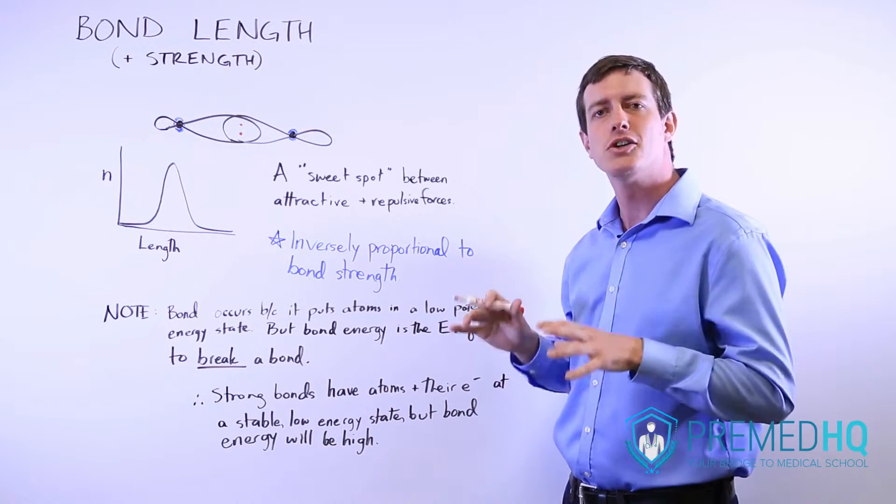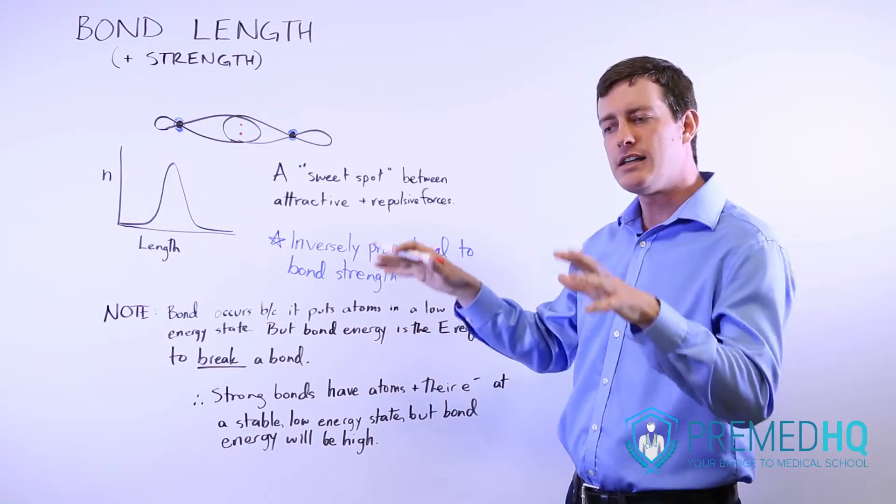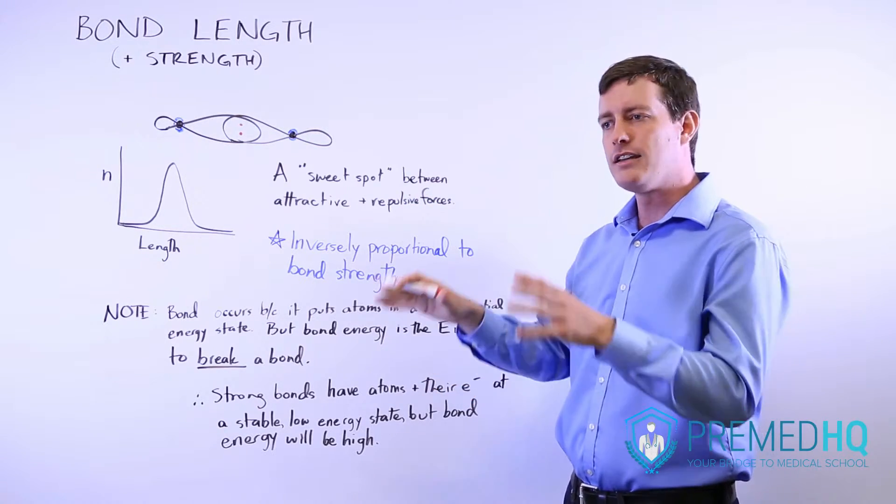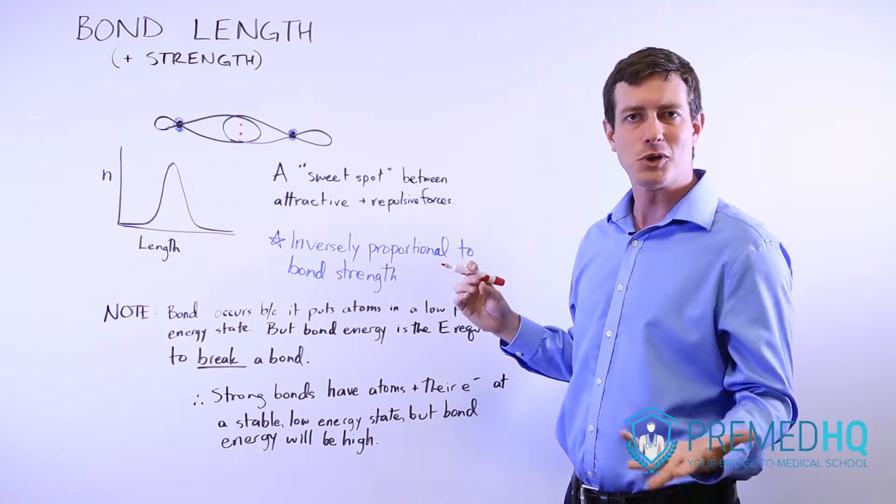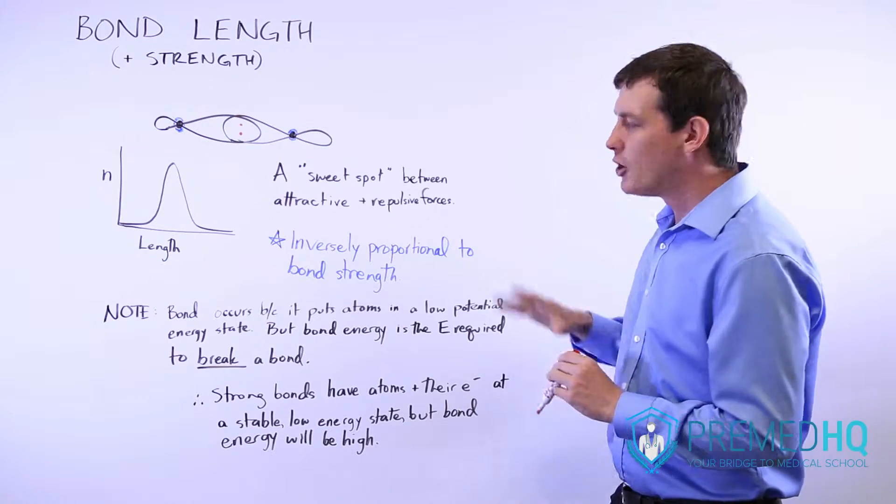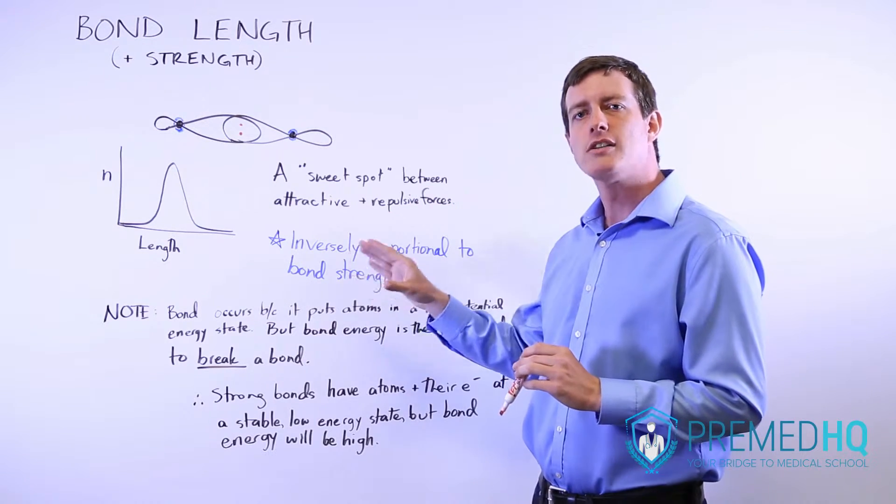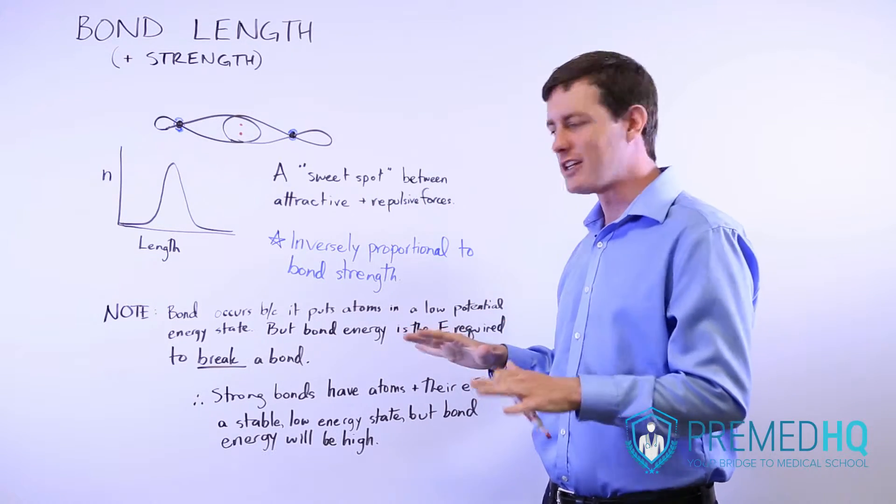A bond occurs usually because it is energy releasing and the product ends up being at a lower energy state than the reactants were initially. But don't be fooled to think that bond strength represents the potential energy of the electrons.